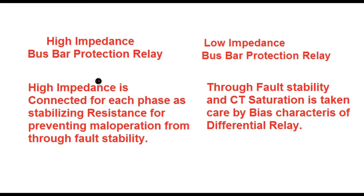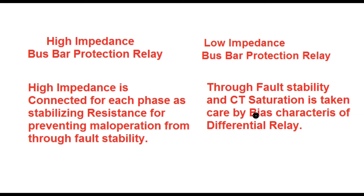In case of high impedance bus bar protection relay, a high impedance — called the stabilizing resistance — is connected in series with the relay for each phase. This stabilizing resistance is provided to prevent maloperation from through fault stability when either CT saturates. The maximum through fault current must be calculated to determine the stabilizing resistance. In case of low impedance bus bar protection relay, no such stabilizing resistance is required; through fault stability is maintained by the bias characteristics of the differential relay.